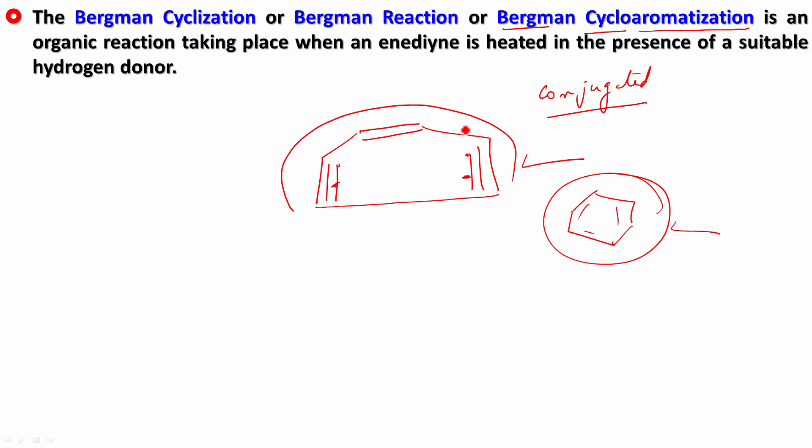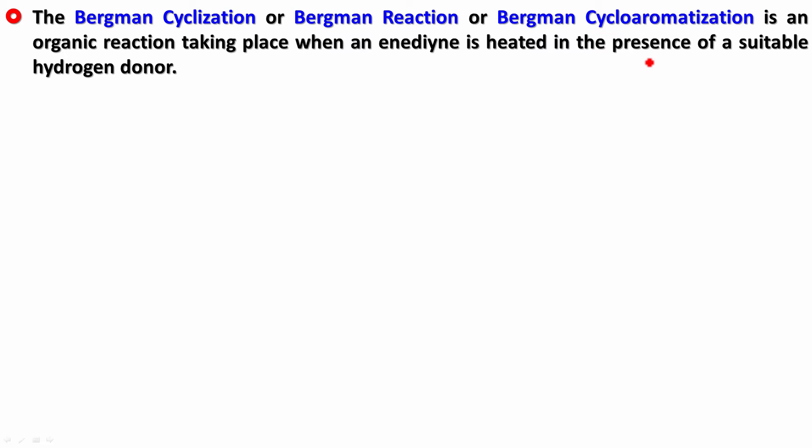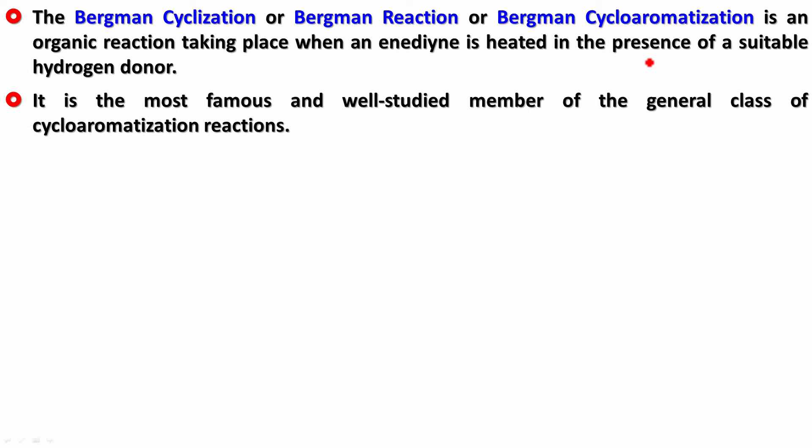Enedine becomes an aromatic molecule. That's why we call it the Bergman cycloaromatization. It is one of the most famous reactions in organic chemistry. It has a lot of medicinal applications, and it is named after the American chemist who discovered this reaction, Robert G. Bergman.